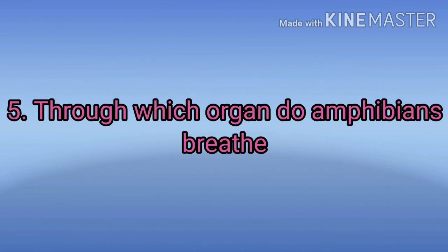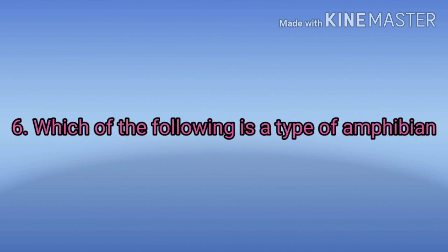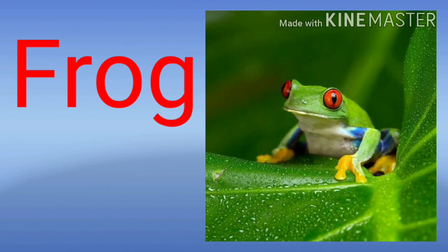Question number 5: Through which organ do Amphibians breathe? The answer is lungs and glands. Question number 6: Which of the following is a type of Amphibian? The answer is frog.